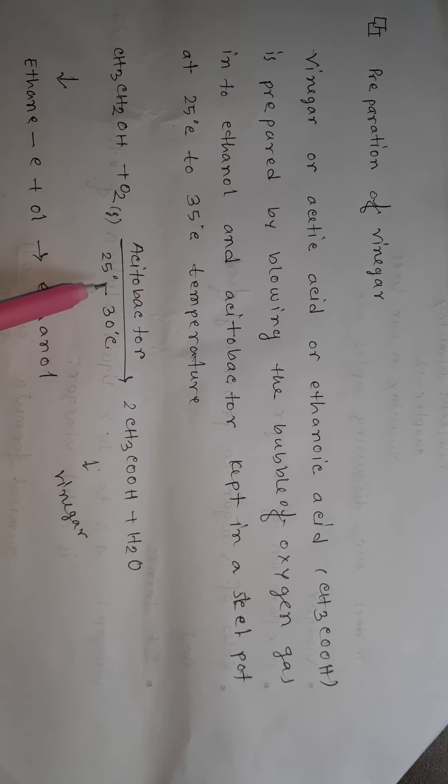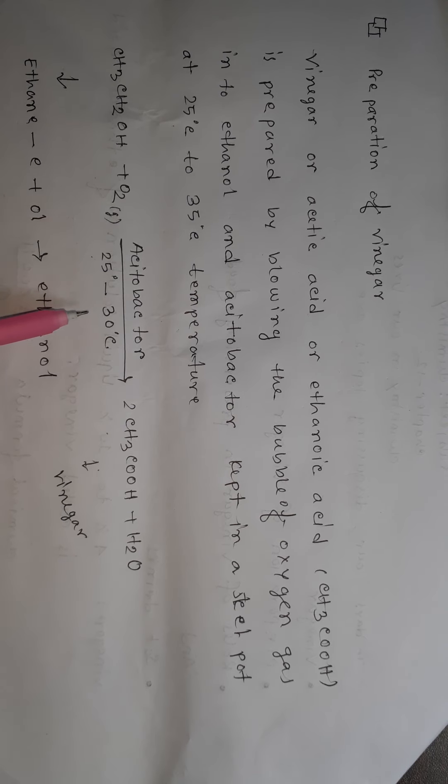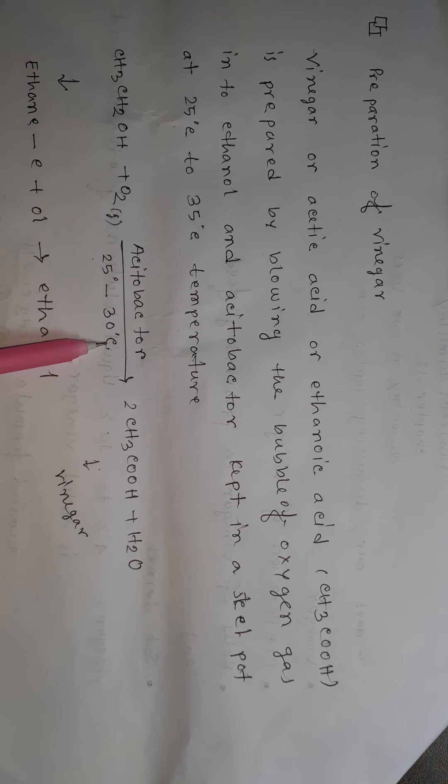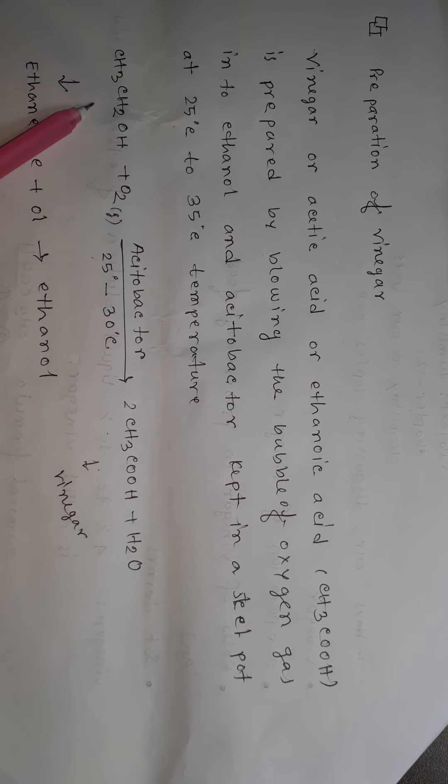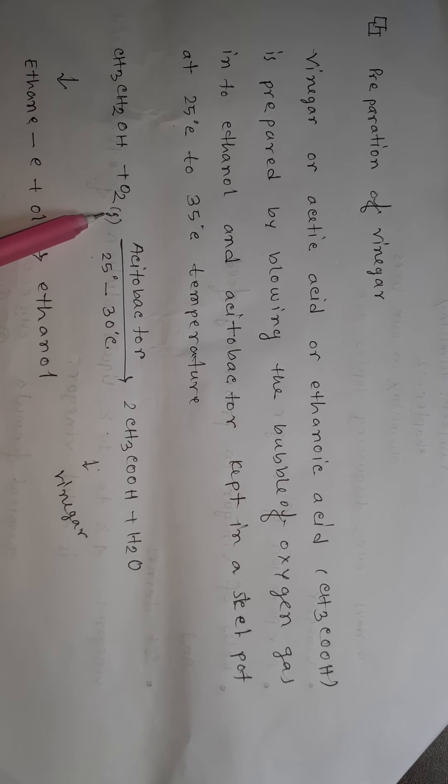At 25 to 35 degrees Celsius, acetobacter and ethanol react with bubbles of oxygen and produce vinegar and one molecule of water. Ethanol — we know from Chapter 11, naming of organic compounds.